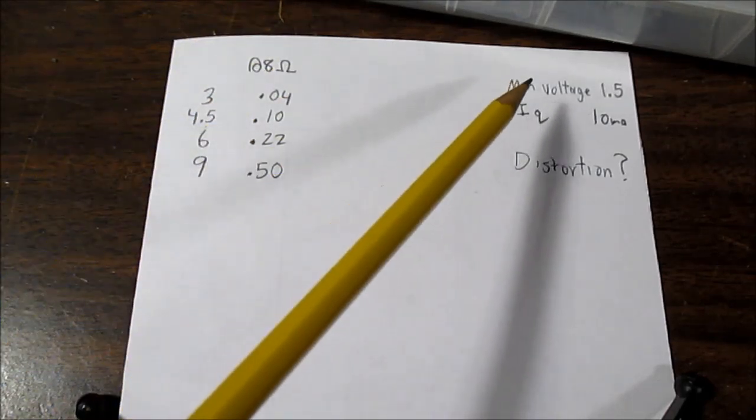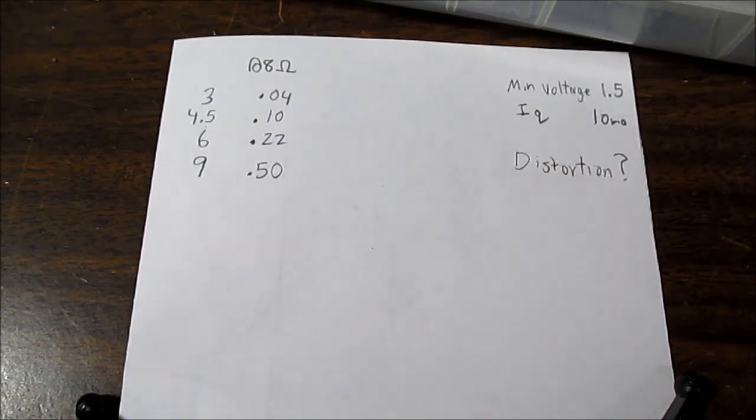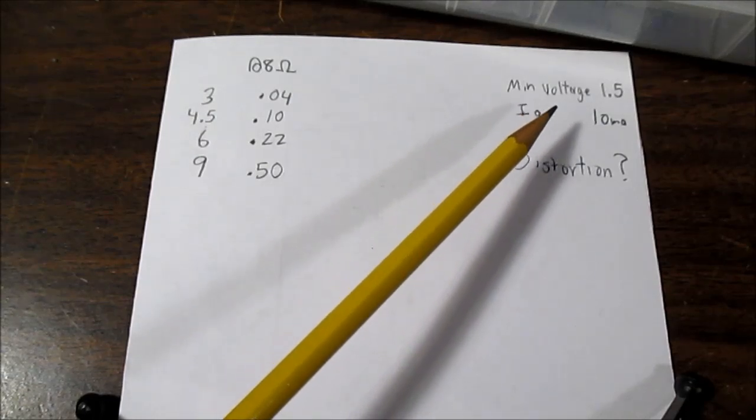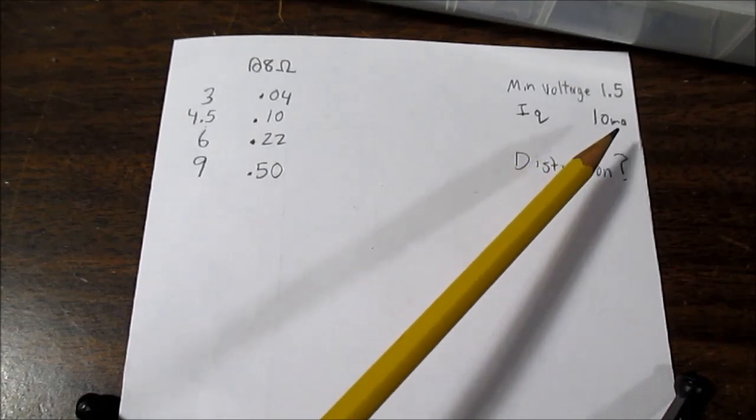And, it does run down to 1.5 volts. But, you really, you know, it doesn't make sense to test it any lower than 3 volts. Because, your power output is so weak at such a low voltage. It doesn't really make sense. It is great for battery power because the quiescent current, in other words, the current it draws just sitting idle, is only 10 milliamps.